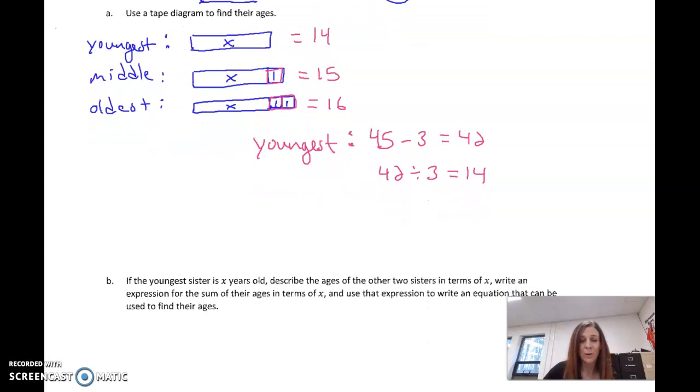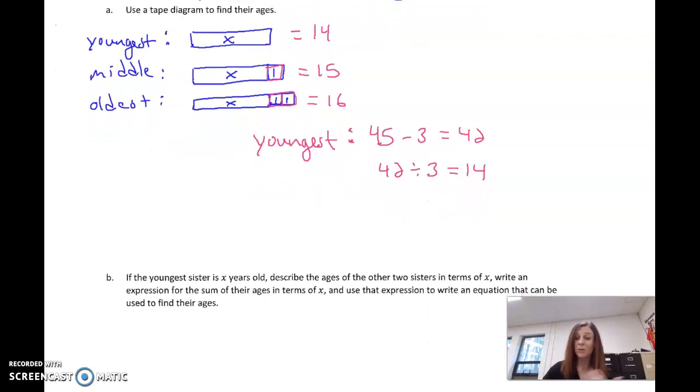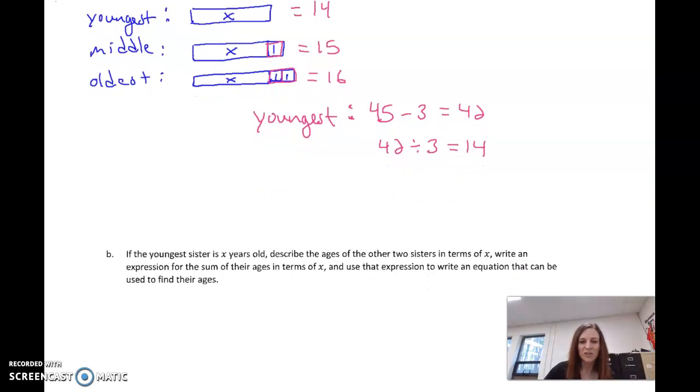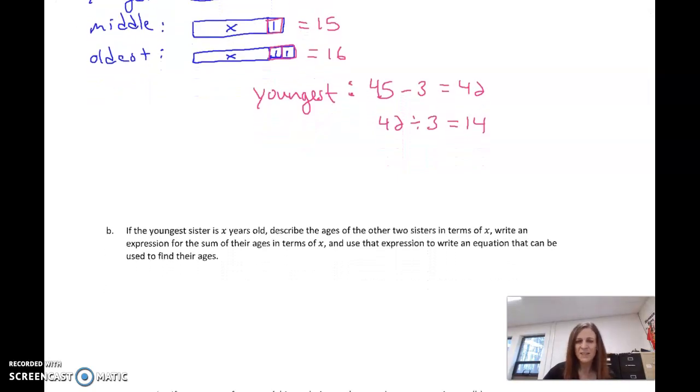So now let's use that to write an equation, kind of like we've done in the past. So if the youngest sister is X years old, it says describe the age of two other sisters in terms of X. So let's write this off to the side. Youngest, we're going to say is X. The middle child is X plus 1, which means the oldest is X plus 2. Alright. So we have our expressions set up.